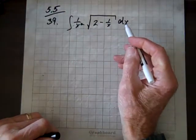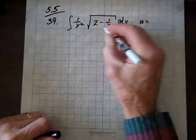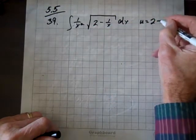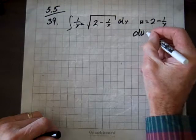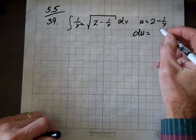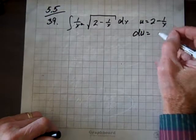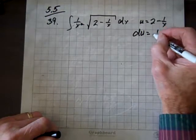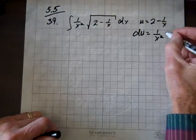So let's see, we're going to let u equal 2 minus 1 over x, and du equals, well, the derivative of 2 is 0, the derivative of this thing is going to be 1 over x squared dx.